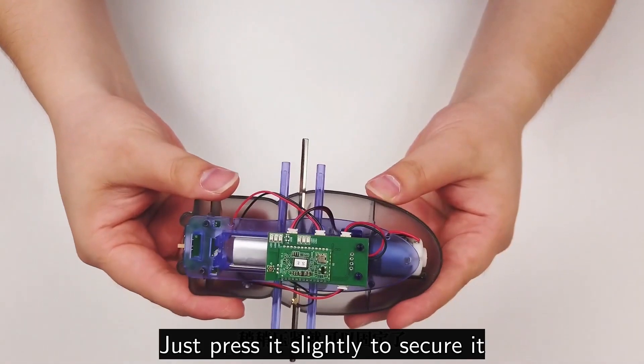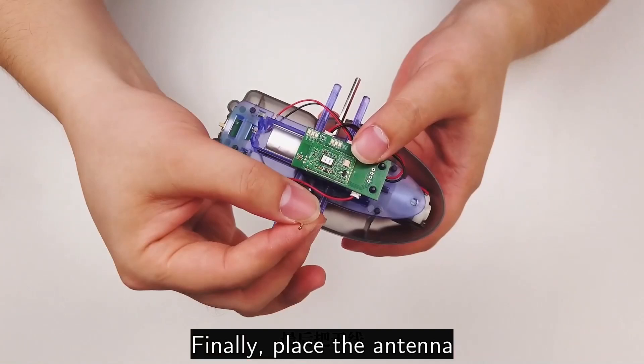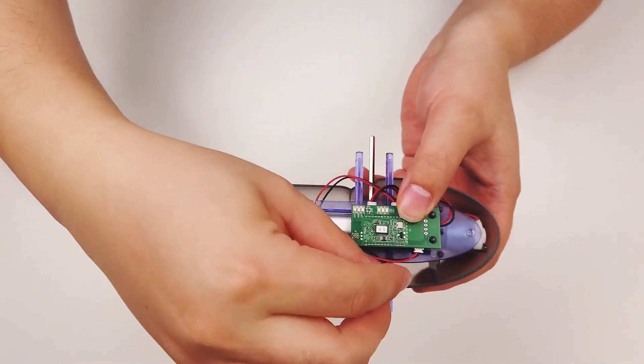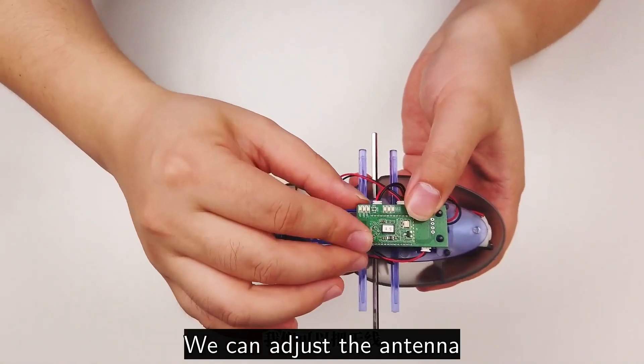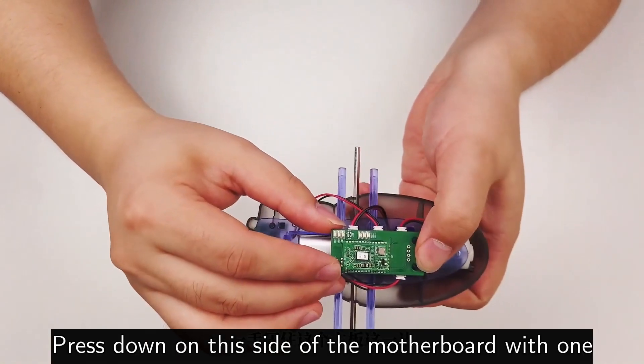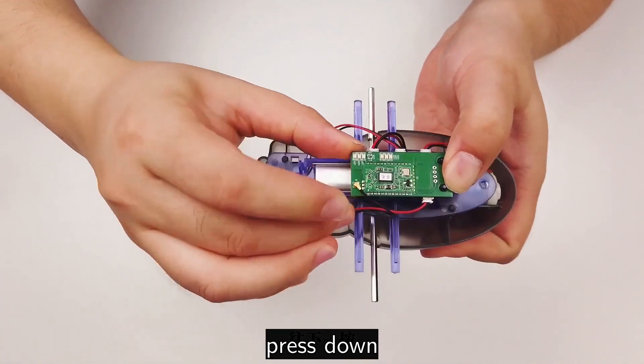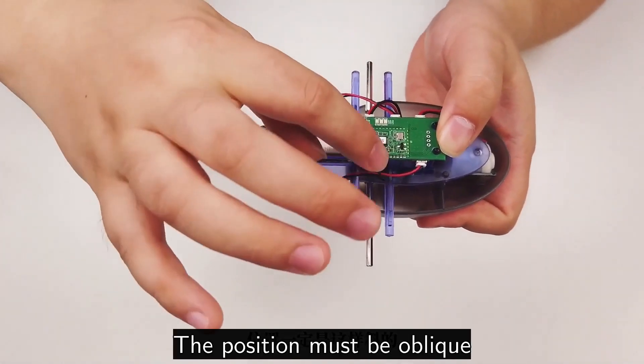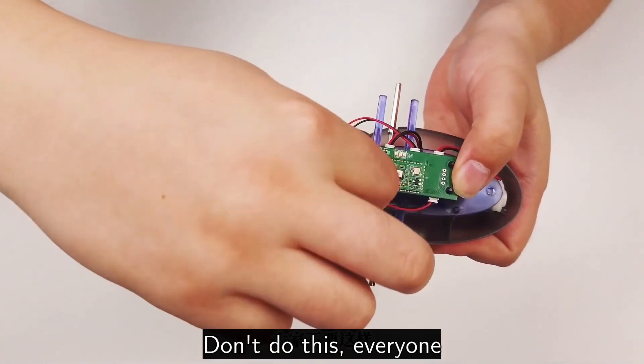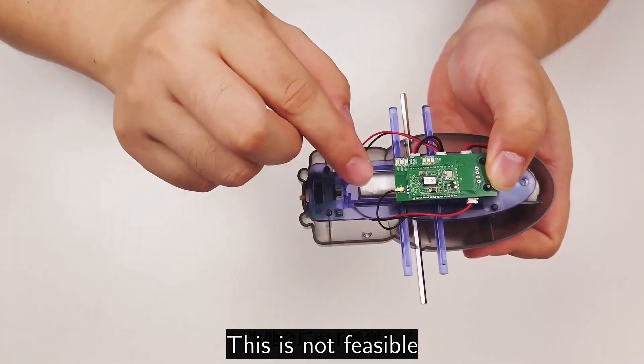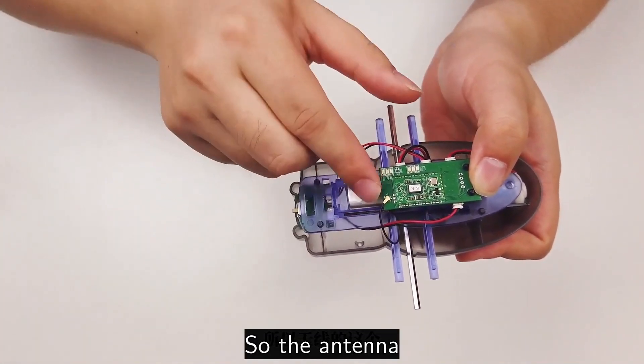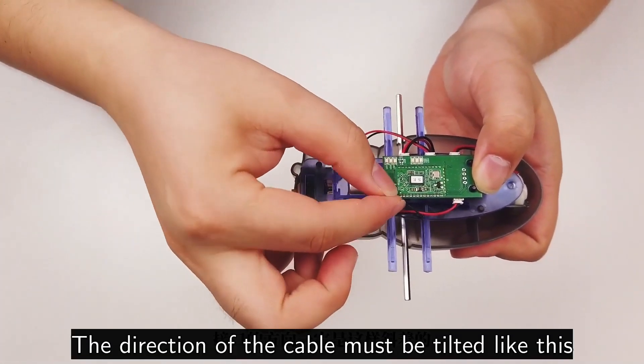Finally, place the antenna. The antenna is connected here. We can adjust the antenna. Press down on this side of the motherboard with one hand. Pay attention to the antenna. The position must be oblique, like this. Don't do this everyone. This is not feasible because it will interfere with the upper shell later. So the antenna, the direction of the cable, must be tilted like this.